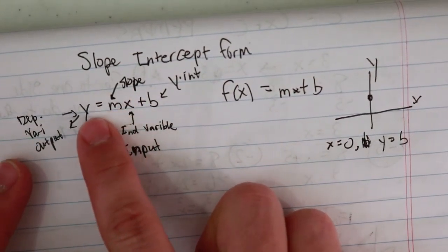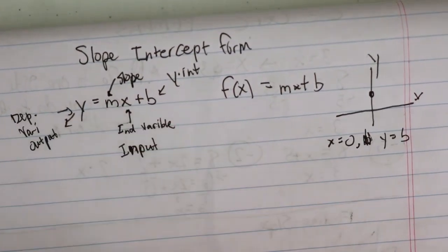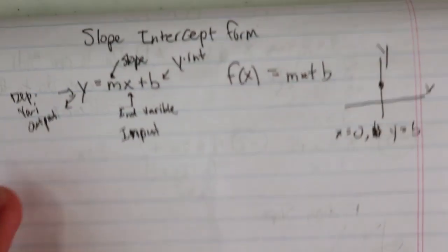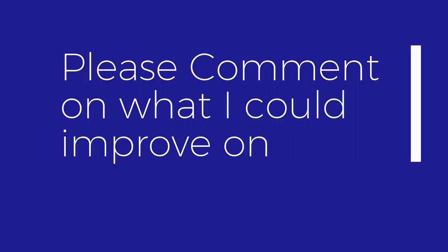But this is a good way, when you look at an equation in this form, to know both the slope and the y-intercept, so you can graph it really quickly. So that's slope-intercept type equations. Thank you.